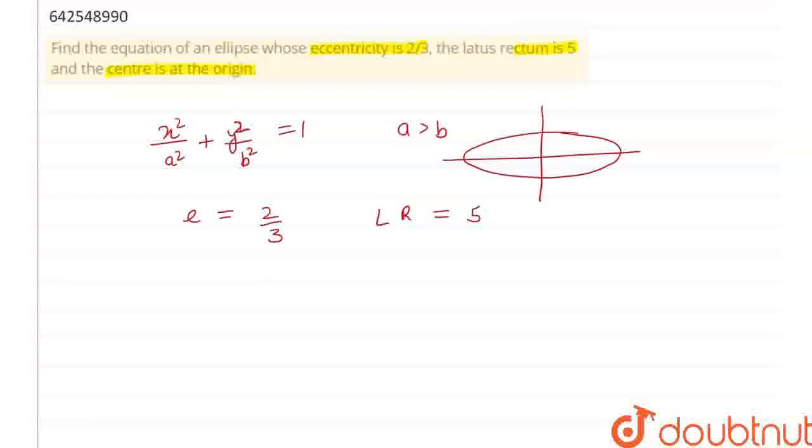So let's suppose that my ellipse is like this where a is greater than b. Therefore equation of my ellipse would be x square upon a square plus y square upon b square is equal to 1. And here we know that e is equal to 2 by 3 and the length of latus rectum is equal to 5.